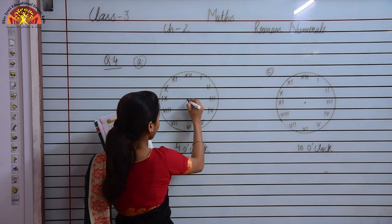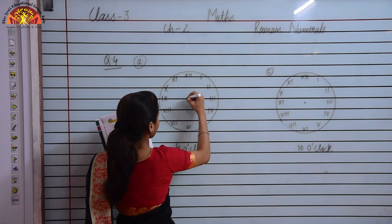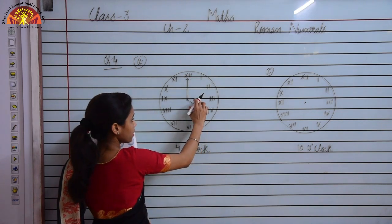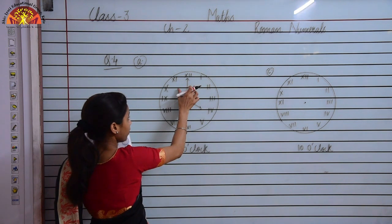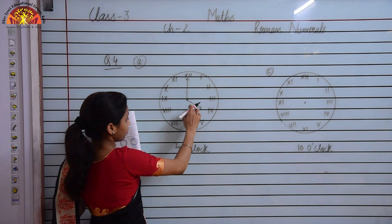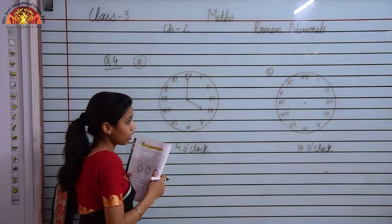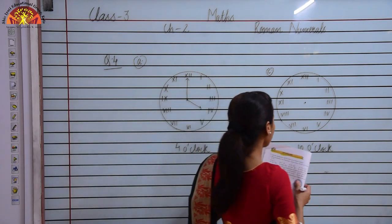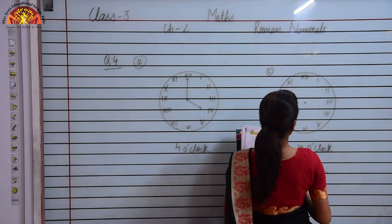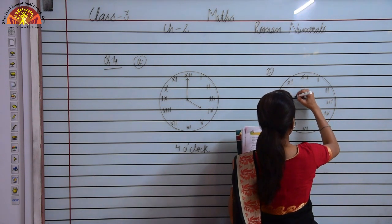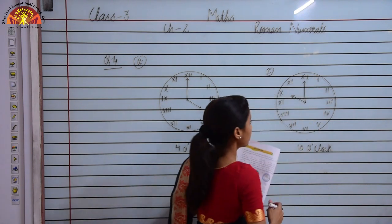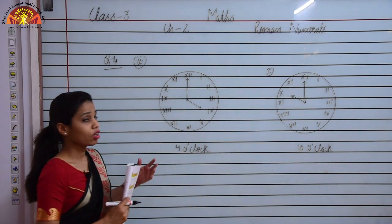I will draw the hour hand at 4 and the minute hand at 12. The shorter needle represents the hour hand and the longer needle represents the minute hand. So this is the representation of 4 o'clock. Now for part C, I have to draw the hour hand and minute hand to show 10 o'clock. I will draw the hour hand at 10 and the minute hand at 12. So this represents 10 o'clock and this represents 4 o'clock.